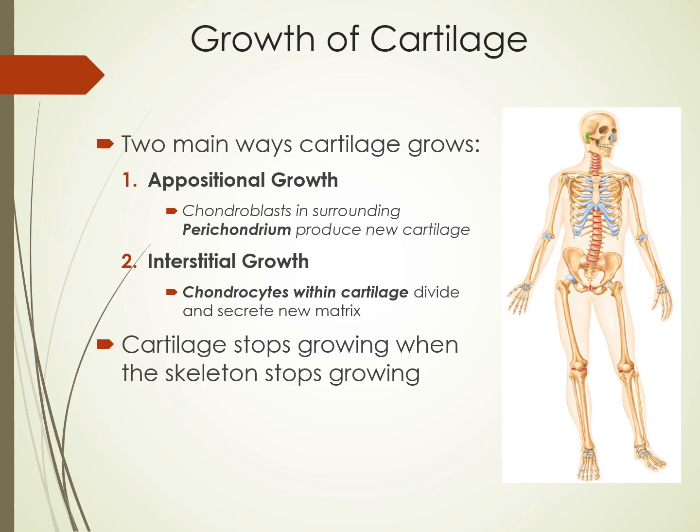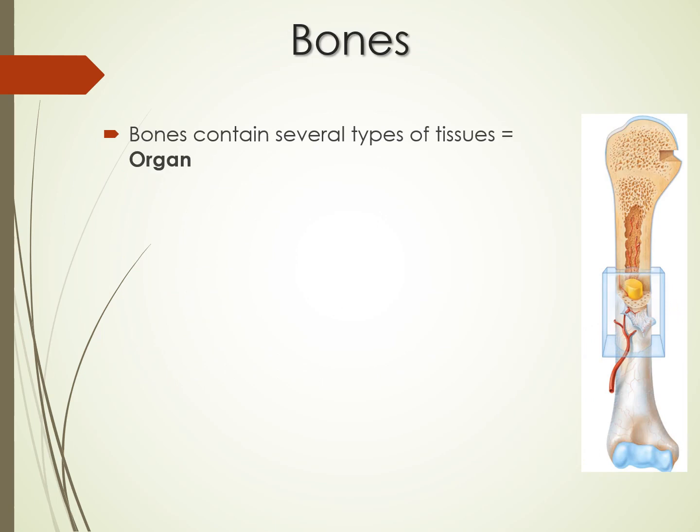Cartilage is very active during development — it's a big reason why we grow. Cartilage stops growing when we stop growing, and then it just becomes part of your joints. Interestingly, bones actually develop as cartilage first — your bones start as cartilage, and then we replace that cartilage tissue with bone tissue.